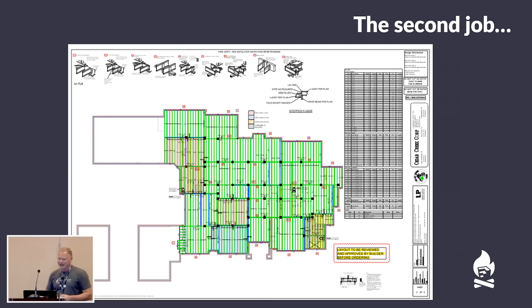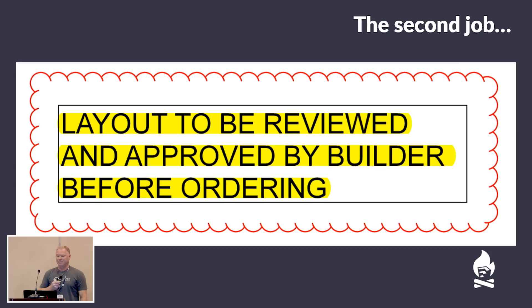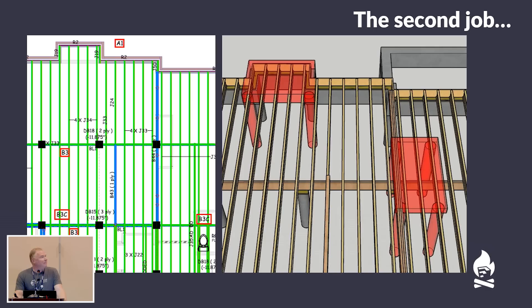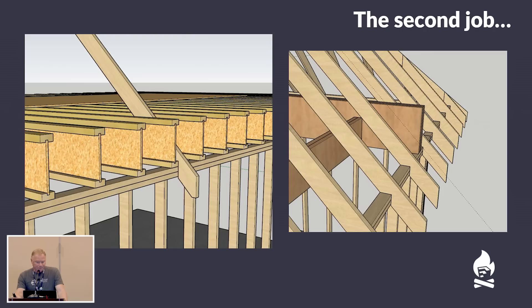He had three masonry fireplaces, a safe room, and a beautiful colored 2D drawing of his TJIs, rim joists, and LVL beams — everything labeled and dimensioned. But right at the bottom it said 'layout to be reviewed and approved by builder before ordering,' and he was getting ready to order the whole package — probably a $60,000 order. When I modeled all the TJIs and beams, I found beams and TJIs running through every one of those masonry fireplaces, which require hard slabs. We went back and got them to completely revise that before he ever ordered.